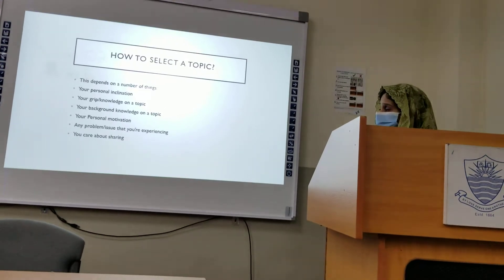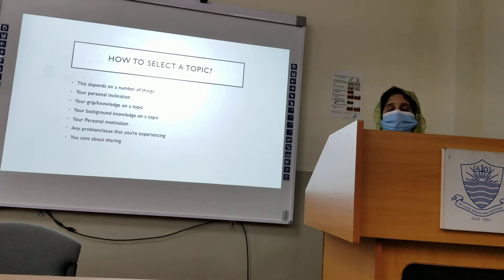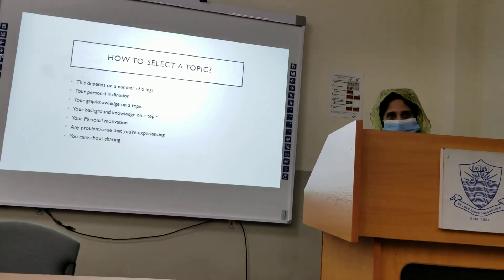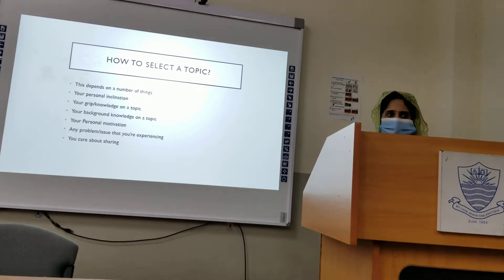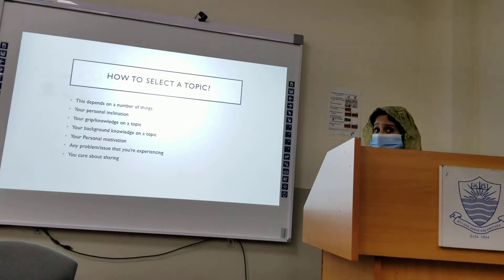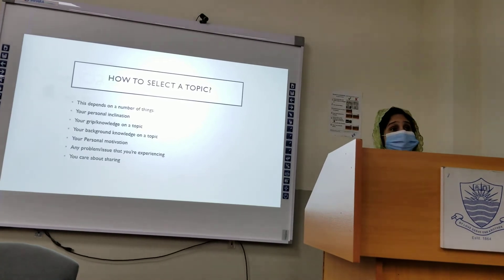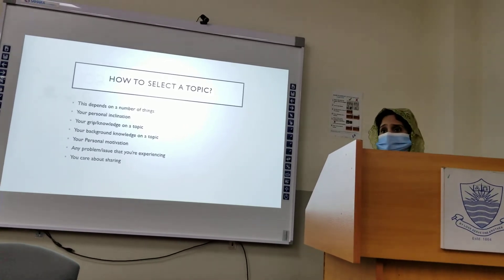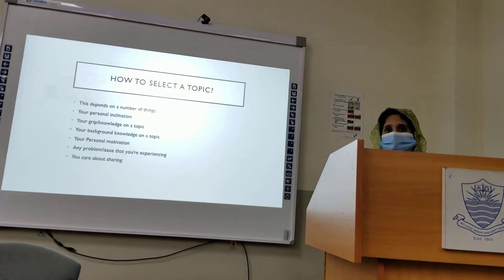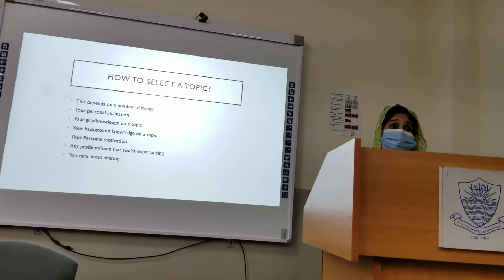Selecting a topic depends on a number of things. The first thing — your personal inclination. What topics are important to you? What are you inclined towards? Are you inclined towards writing about social issues, political issues, economic issues, issues related to sports, business? Everyone has personal inclinations, their likings and dislikings. First of all, it comes down to your area of interest — what you are actually interested in.